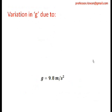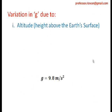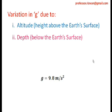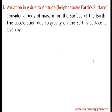Now we will find variation in g due to altitude, depth, and latitude. For altitude: consider a body of mass m on the surface of the earth. Acceleration due to gravity at the surface is g = GM/R², where R is the radius and M is the mass of the earth. If the object is taken to height h above the surface, the new radius becomes R + h, so gravitational acceleration changes to g_h.